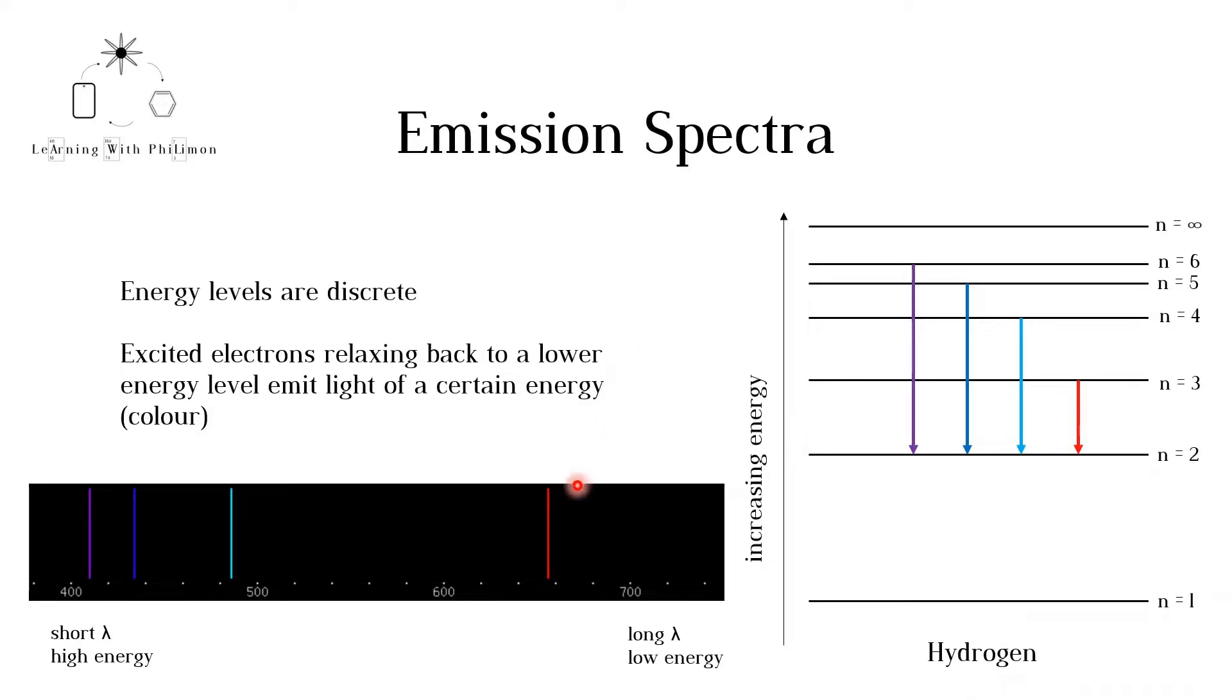This has interesting real life applications. Neon lights can contain different noble gases, such as neon. Energy in the form of electricity excites electrons in the atoms to higher energy levels. When the electrons relax, they emit colored light. Depending on the element used, the color will differ. Neon lights are used as signs for stores.